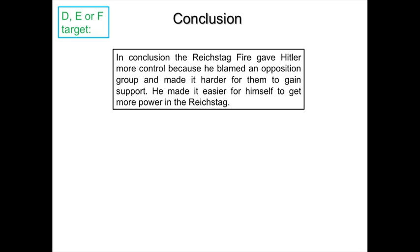This candidate has given a conclusion: in conclusion, the Reichstag fire gave Hitler more control because he blamed an opposition group and made it harder for them to gain support, and he made it easier for himself to get more power in the Reichstag. They've summarised their main argument and shown good knowledge throughout their answer. There are only two paragraphs, but they do show detailed knowledge of how the fire helped Hitler increase his power. This would be about 6 out of 12 marks in the exam. Have a look at your own answer — does it provide detailed description of how the Reichstag fire increased Hitler's power? If not, what do you need to do to improve next time?